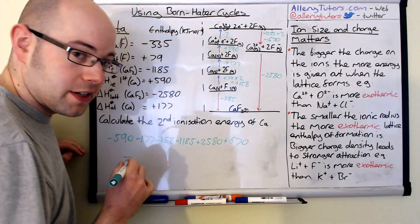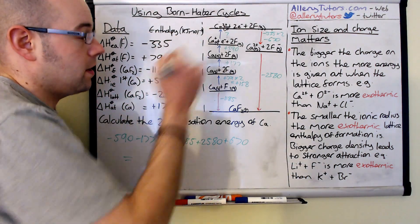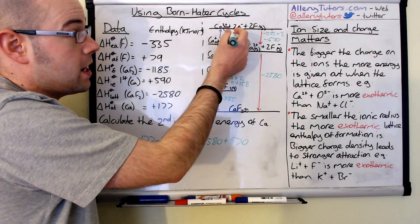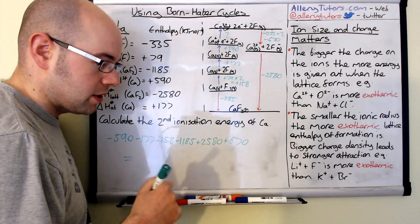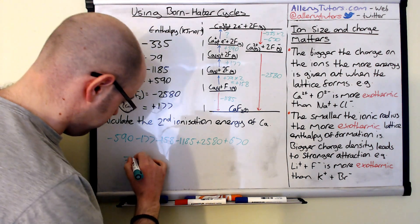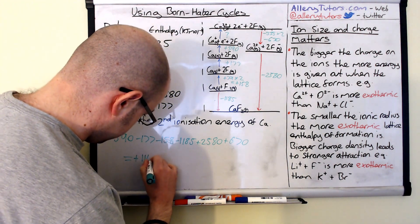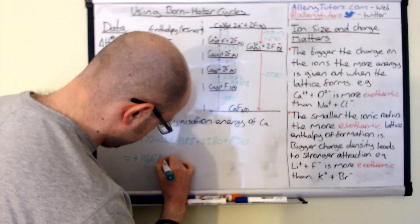Now if you put all that in your calculator we should get a value that fits in there. And it should be a positive value as well because it would have been an endothermic process. So this is plus 1140 kilojoules per mole.